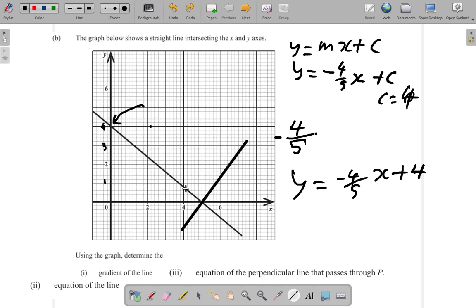Perpendicular means it's at right angle to the original line, 90 degrees to the original line.